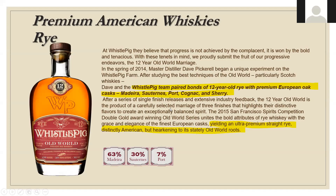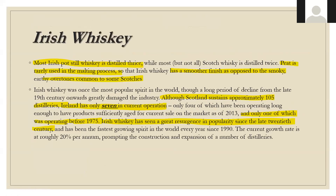Moving to Irish whiskey — a massive category, with about 70% owned by Jameson, produced at the Midleton Distillery. Most Irish pot still whiskey is distilled three times while most Scotch is distilled only twice. Peat is rarely used in the malting process — Connemara is the Irish whiskey that is peated. So typically Irish whiskeys have a smoother finish compared to the smoky, peaty Scotch. Irish whiskey was once the most popular spirit in the world, but a long period of decline from the late 19th century really damaged the industry.